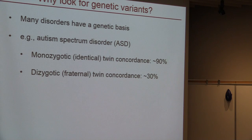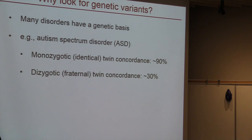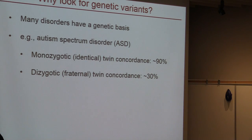Autism is a disorder known to have a strong genetic basis, and the most straightforward evidence for this genetic aspect comes from twin studies. If you have identical twins and one has autism, about 90% of the time the other twin will also have autism. But for fraternal twins, if one twin has autism, the other will have autism only about 30% of the time.